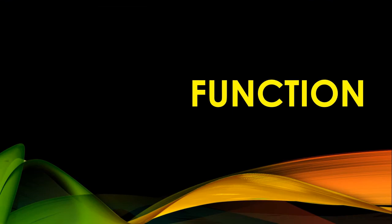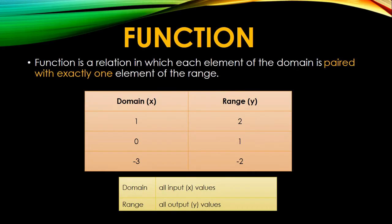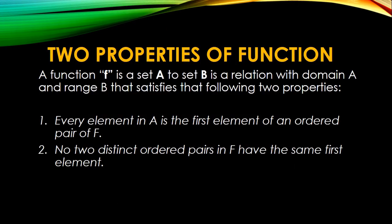So now let's proceed to function. So function class is a relation in which elements of the domain is paired with exactly one element on the range. So if you have a domain, it's paired with only one range. It's not allowed to go back and forth with the domain in a function.